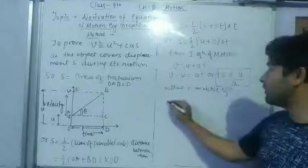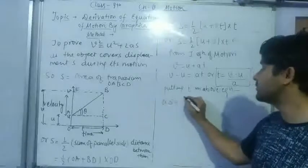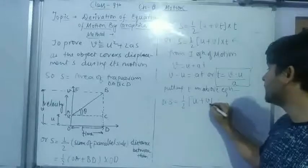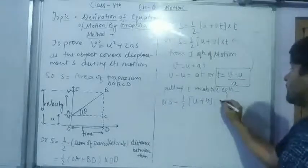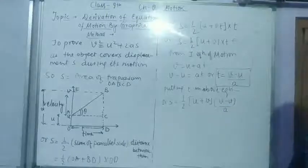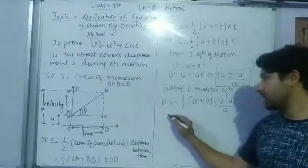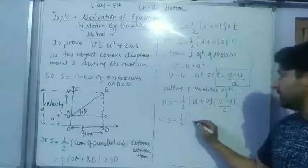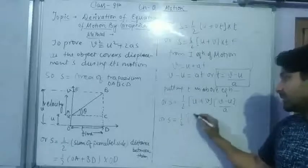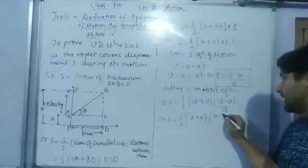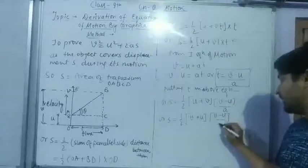We have put it, so what will happen, s equals to 1/2 U plus V multiply it will be V minus U upon A. Time T's value we have put. Now we may write s equals to 1/2, V plus U and V minus U upon A.